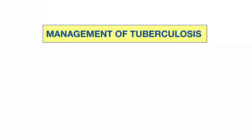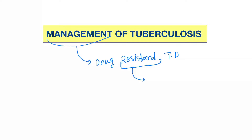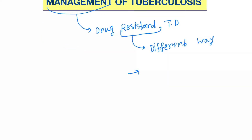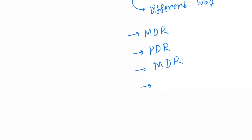Hello friends, today our topic is the management of tuberculosis. In this management we will discuss drug resistant TB. Resistance is developed in different ways, and accordingly they are divided into: monodrug resistant, polydrug resistant (PDR), multidrug resistant (MDR), and extremely drug resistant (XDR). MDR TB mainly implies multidrug resistant TB.